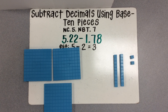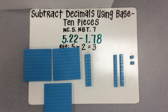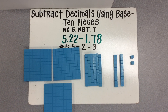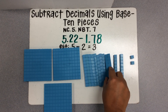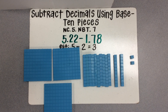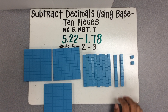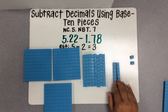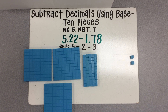I'm going to take 1 whole and ungroup it for 10 tenths. So we ungrouped 1 whole for 10 tenths. Now we have 12 tenths and we are able to subtract 7 tenths from that. So we'll go ahead and take away 7 tenths. So I have subtracted the 7 tenths.